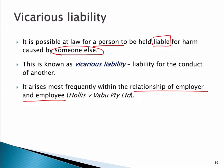Vicarious liability is where one person is held liable for the harm caused by someone else. We concentrate on the employer-employee relationship, which is more about the control exercised by the person in the employer position rather than the strict legal definition or what the parties call each other in terms of their relationship.